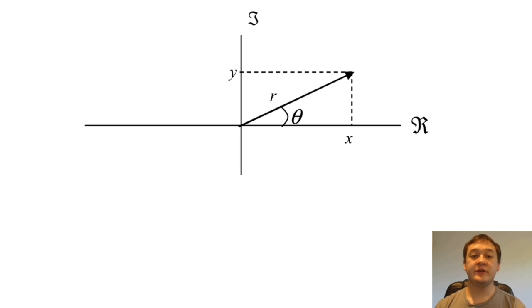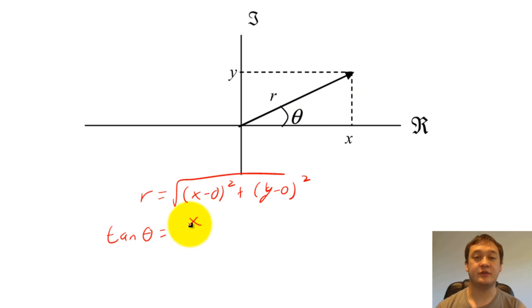We can switch between these notations by using basic trigonometry. We can calculate r by using the Cartesian distance from the origin to the tip of the arrow. We can then calculate theta by using the tangent function that relates the angle to x and y.